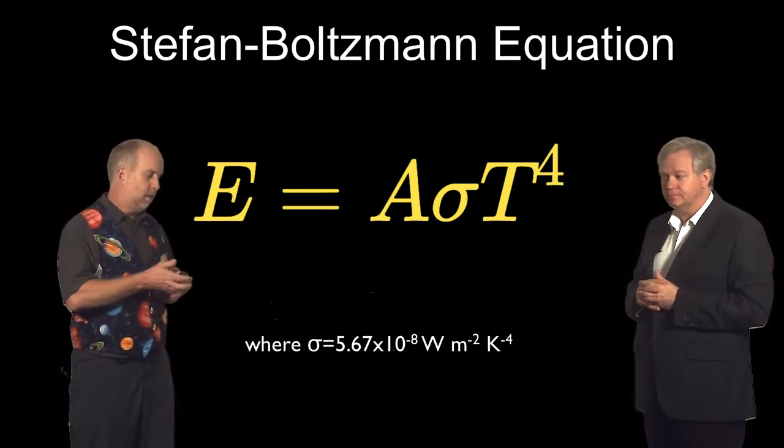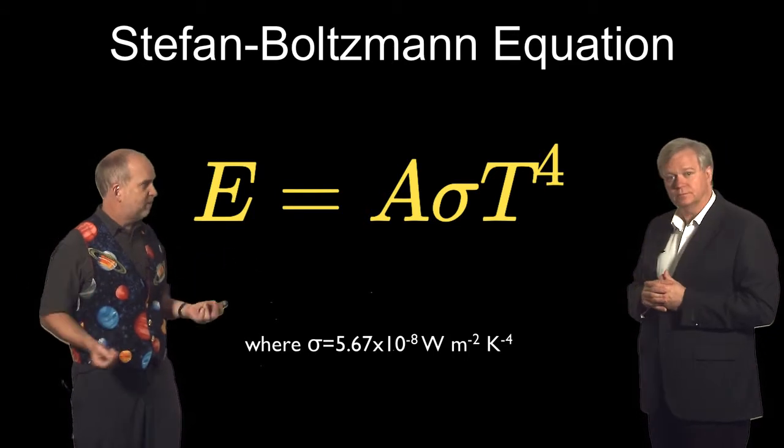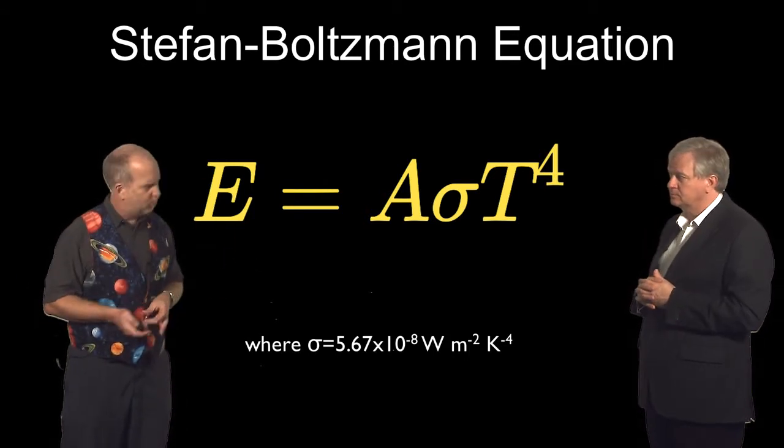So that's given us a flat continuum spectrum, and it's given us a spectrum with emission lines. How about a spectrum with absorption lines? How are we going to get one of those?